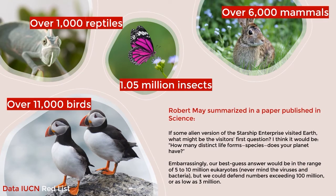As Robert May summarized in a paper published in Science: if an alien version of the Starship Enterprise visited Earth, what might be the visitor's first question? He thinks it would be: how many distinct life forms — species — does your planet have? Embarrassingly, our best guess answer would be in the range of 5 to 10 million eukaryotes, never mind the viruses and bacteria, but we could defend numbers exceeding 100 million, or as low as 3 million.